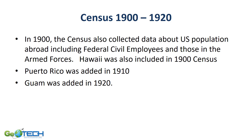As America started to expand its reach outside its traditional borders in the early 1900s, the United States Census followed. It gathered information on new territories including Hawaii, Puerto Rico, and Guam.